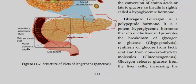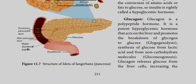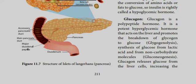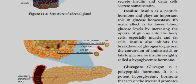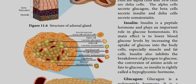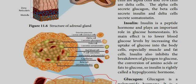If you look at the structure, there are two types of cells. These will be called acinar cells. The other type is the islets of Langerhans. The islets of Langerhans contain alpha cells, beta cells, and delta cells.